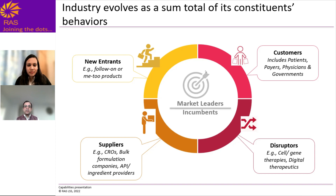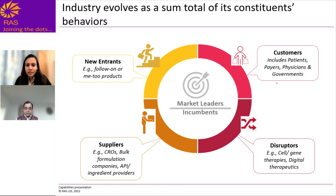Market leaders shape the environment with regards to their pricing policy and how they set up the supply chain. Then you have on the top left, new entrants — these are essentially companies that are trying to produce similar products or marginally differentiated products as compared to market leaders.